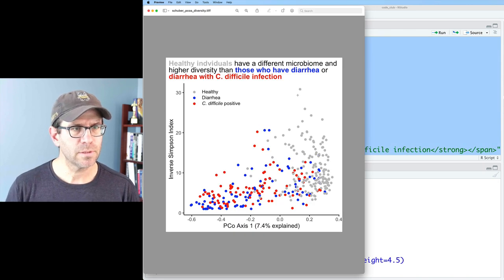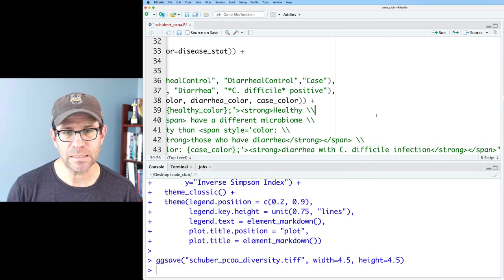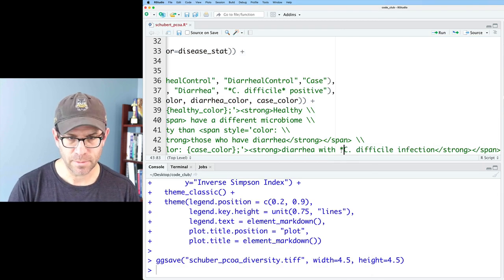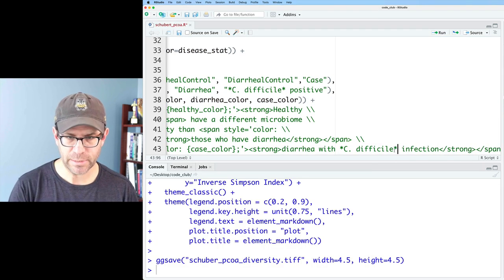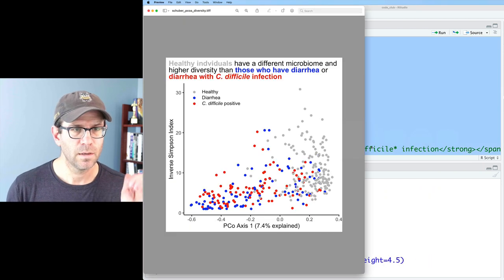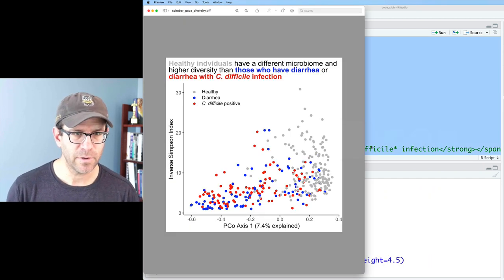Boom. Nice. And so then we want C. difficile to be italicized. And I think we can put stars in like we did for the legend and that will then italicize C. difficile. Nice. And now that's italicized.